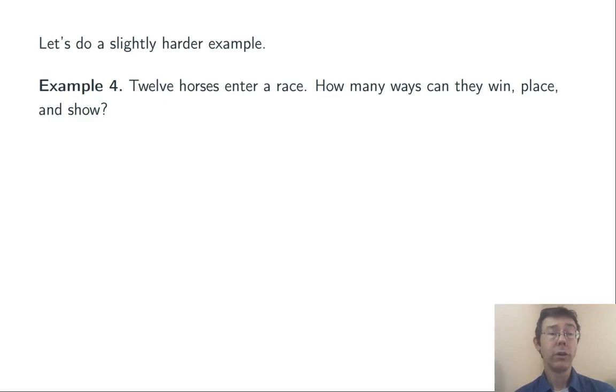Let's do a slightly more involved example. Twelve horses enter a race. How many ways can they win, place, and show? In other words, how many different possible combinations are there for the first three positions in the race?